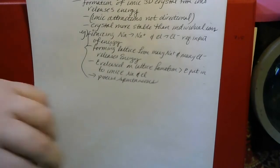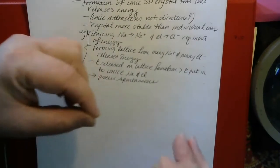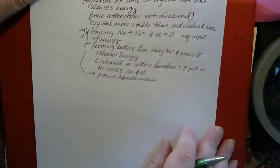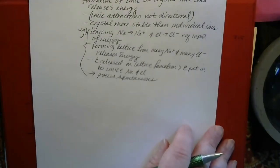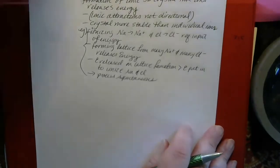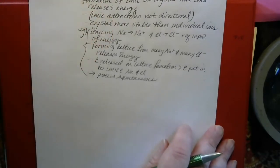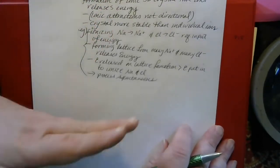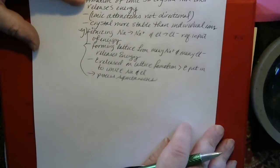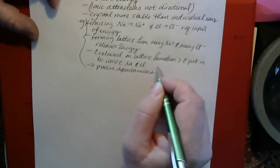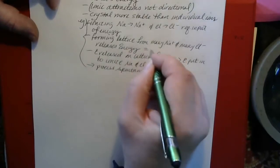If you take a piece of sodium and some chlorine gas and put them in the same container together, they will spontaneously form sodium chloride. That's because overall, the energy released when the lattice forms is greater than the energy that has to be put in to get the ions to form in the first place. That means sodium chloride crystals have lower energy and are more stable than sodium metal and chlorine gas separately. The energy released on lattice formation is what's known as the lattice energy.